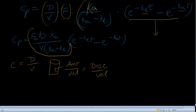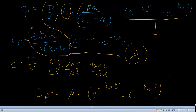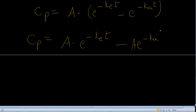This equation gives us information about the rate of the fraction entering the body and the fraction eliminating at any time point. If I take the front part of the equation and call it A, I can rewrite: Cp equals A times (e to the power of minus ket minus e to the power of minus kat). The first term deals with elimination and the second term deals with absorption.